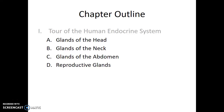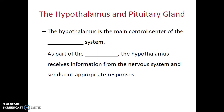We're going to start our tour at the top of the body, at the head. The hypothalamus is the main control center of the endocrine system, as a part of the brain. The hypothalamus receives information from the nervous system and sends out appropriate responses.